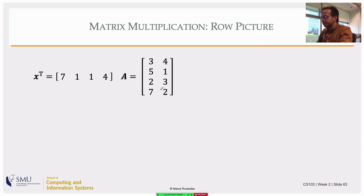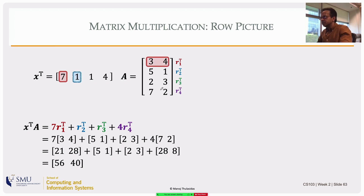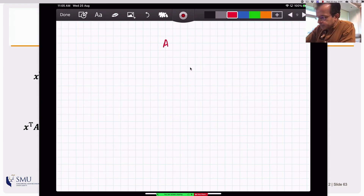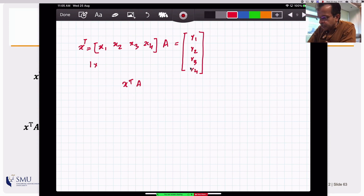Now the row picture. Instead of multiplying A on the right by a column vector, multiply on the left by a row matrix — x transpose. Then x^T A is a linear combination of the rows of A. Calling the rows r1^T, r2^T, r3^T, and so on, x^T A takes a linear combination of those rows. If A's rows were just numbers r1, r2, r3, r4, and x had elements x1, x2, x3, then x^T A would give a scalar.